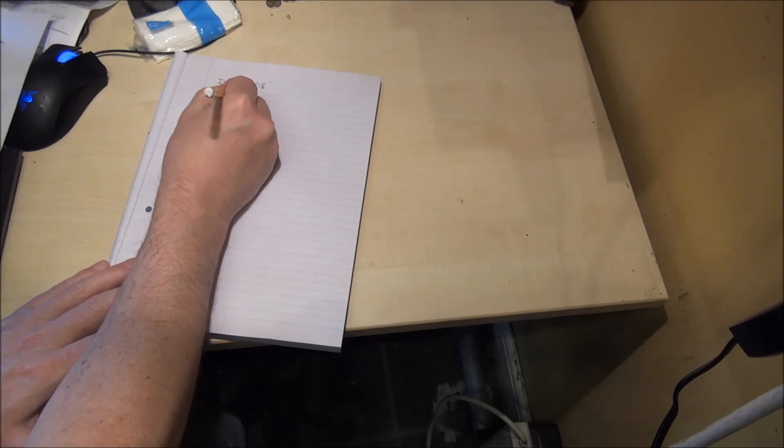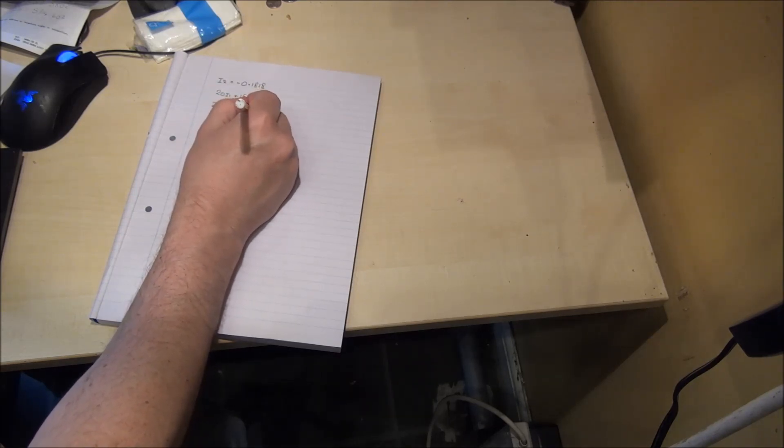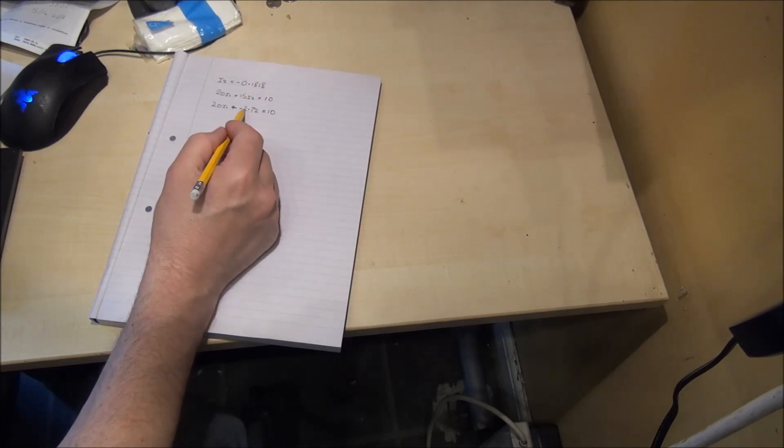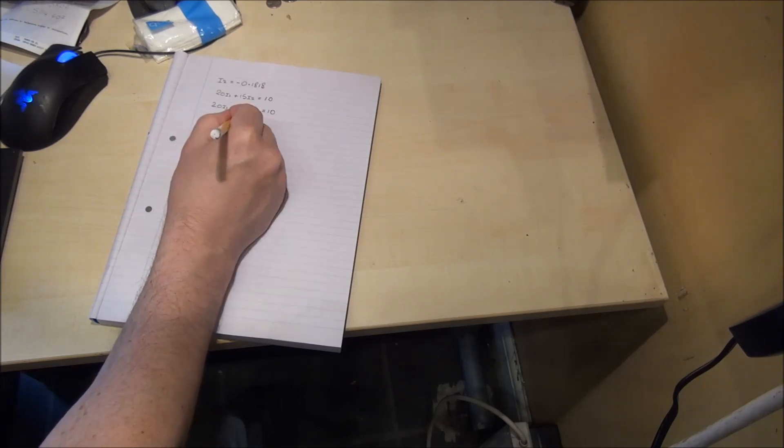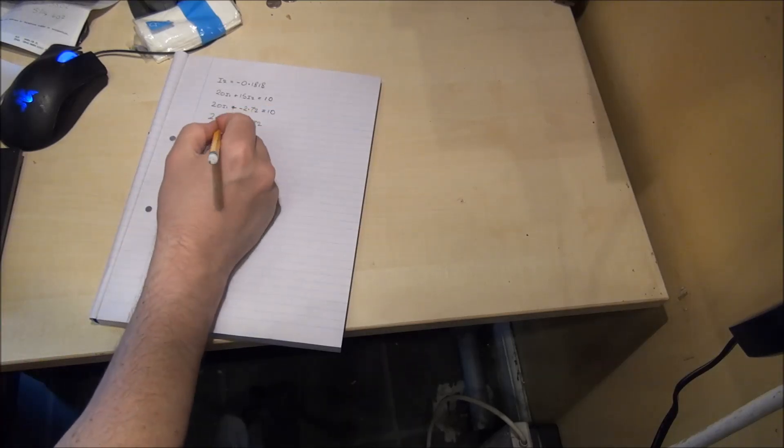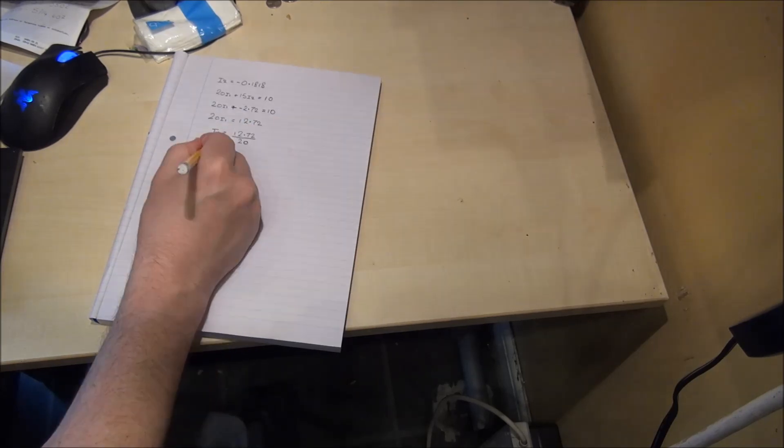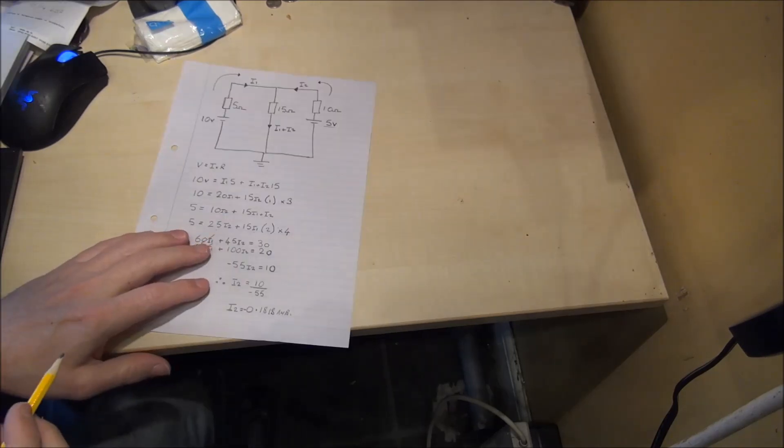20 I1 plus 15 times minus 0.1818 will give you minus 2.72 is equal to 10. We can further manipulate this equation by taking the minus 2.72 over to the other side. 20 I1 equals 12.72. I1 equals 0.636 Amps.